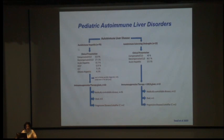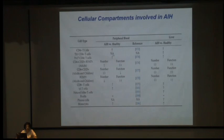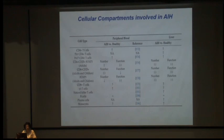This includes pediatric autoimmune liver disorders as well — both autoimmune hepatitis and autoimmune sclerosing cholangitis — so autoimmunity is relevant not just in adults but also in children. Looking at cellular components, CD4 T cells are increased in the liver. CD4+CD25+FOXP3+ regulatory T cell markers are measurable — CD4+CD25 alone and FOXP3 as the regulatory T cell marker.